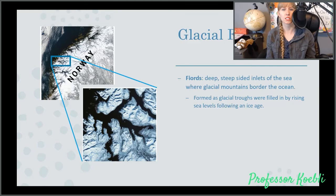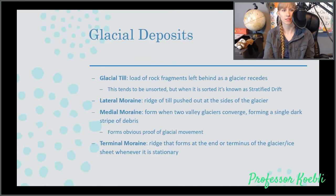Another glacial formation is a fjord. These are deep, steep-sided inlets of the sea where glacial mountains bordered the ocean. Once upon a time, during the Ice Age, sea level was actually lower. So these were actually glacial troughs that were filled in by rising sea levels following an Ice Age.